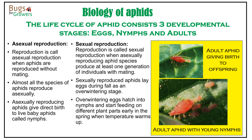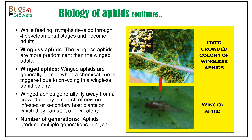Nymphs, either hatched from eggs or directly born, will start immediately feeding on the plant tissues using their piercing and sucking types of mouth parts. While feeding, nymphs develop through four developmental stages and become adults.